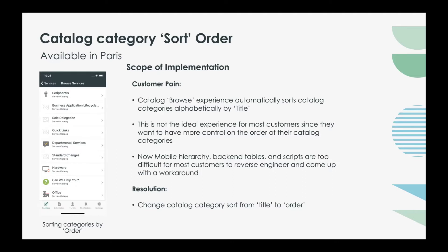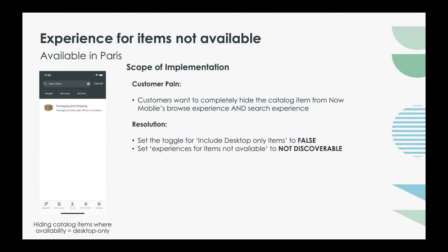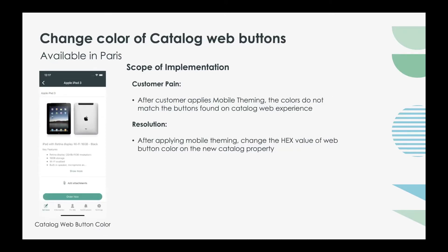Common asks from customers include: how do I sort the order of catalog categories on the browse services tab (by default it's alphabetical), how do we hide catalog items from Now Mobile without removing them from the desktop experience, and on a more extreme use case, how do we make a catalog item completely undiscoverable on mobile — not showing up via global search or browse services at all? We'll configure each of these and show the intended experience as we enable those toggles.